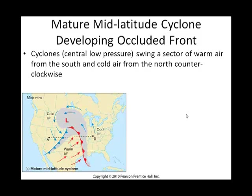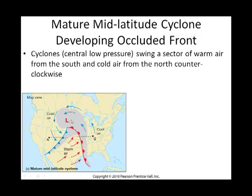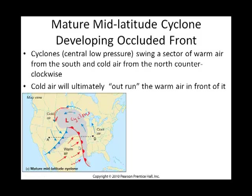These next few slides are slides I brought forward from earlier. Looking at a surface map, this is characteristic of the beginning of a mid-latitude cyclone. You have your central low — your cyclone in place — and we know that in the northern hemisphere, cyclonic air movement around a central low is counterclockwise. You have a sector of cold air being brought down making a cold front, and warm air being brought up creating a warm front. This is characteristic of a maturing mid-latitude cyclone.